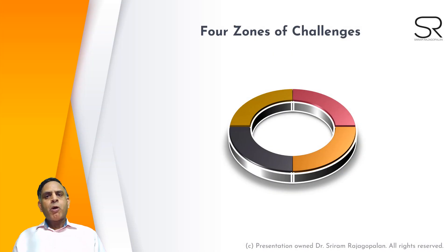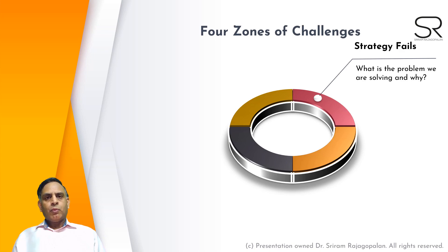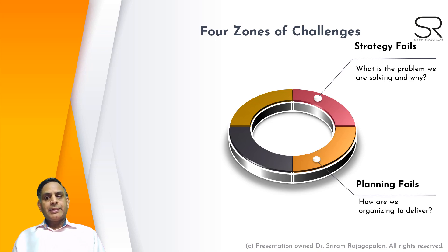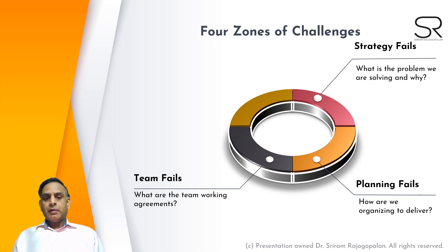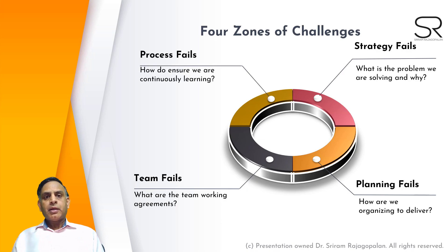I have identified four important zones of challenges. First, strategy failure — we don't know what problem we are solving or why it is a problem. Second, planning failure — planning is essential although plans are not, so we need to organize ourselves for delivery. Third, team failure — working agreements are not established or delivered on, including the definition of done and definition of conforming; if the team uses a tool, the tool must provide that level of information. Fourth, process failure — how do we ensure we are consistently and continuously learning?